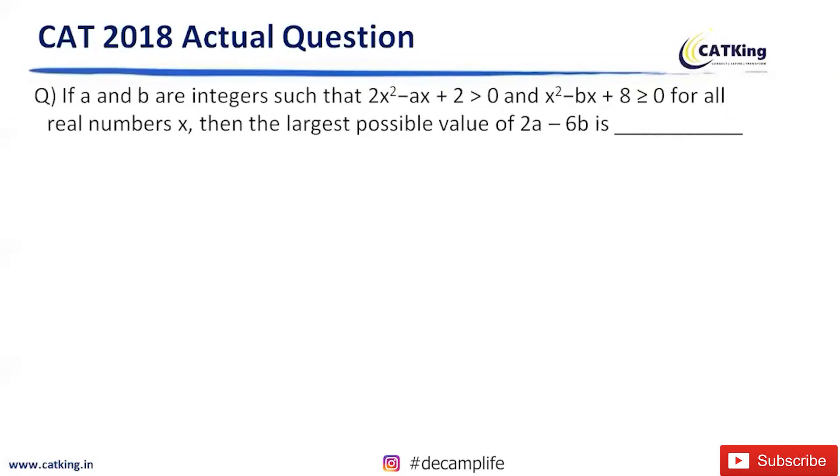If a and b are integers such that 2a² - ax + 2 > 0 and x² - bx + 8 ≥ 0 for all real numbers x, then the largest possible value of 2a - 6b is...